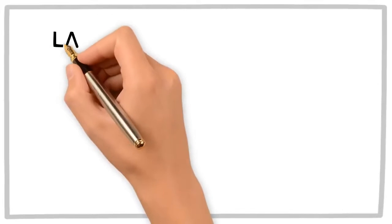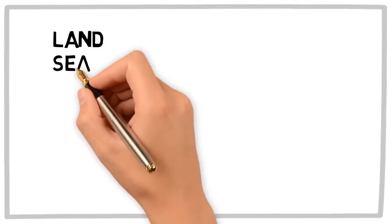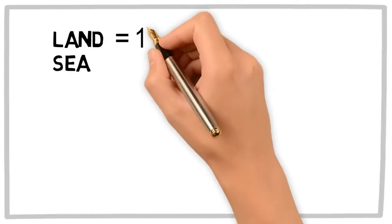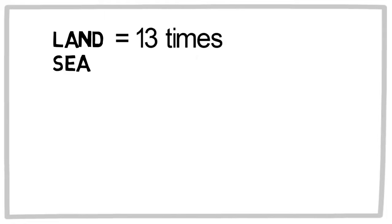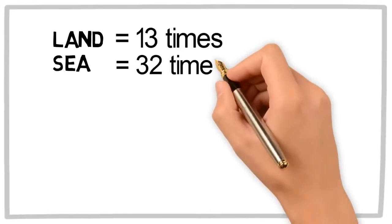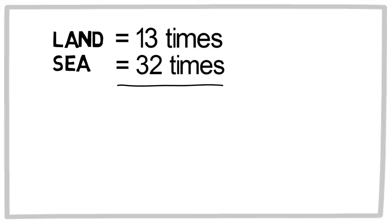Finally, I would like to give you the meaning of land and sea. Land is repeated 13 times, whereas the word sea is repeated 32 times. Well at first sight, it doesn't seem to be very meaningful. However, if you do a simple math...